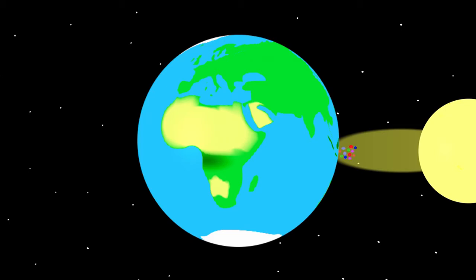On average, the region around the equator receives the most energy from the sun. This causes the surface to warm, which leads the air to expand, making it lighter. The air rises, causing a low pressure area.